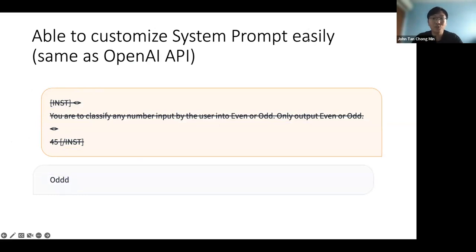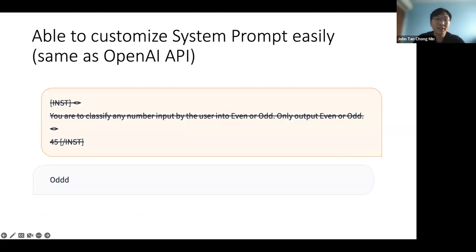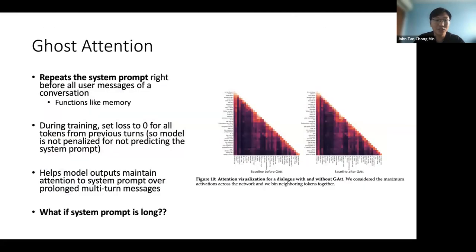Before moving on to the theory part of LLaMA 2, this earlier part was just to show that LLaMA 2 actually can do quite well and is a viable system to use. This is something that LLaMA 2 does that earlier models did not do — earlier models like OpenAI, BART — they didn't do this. This is quite new.